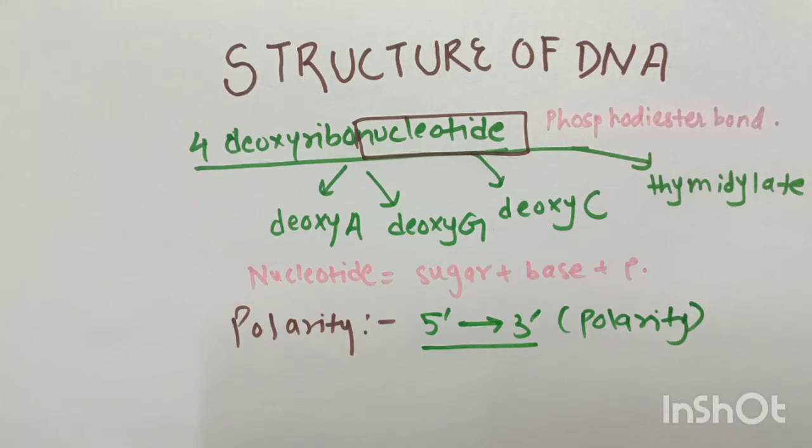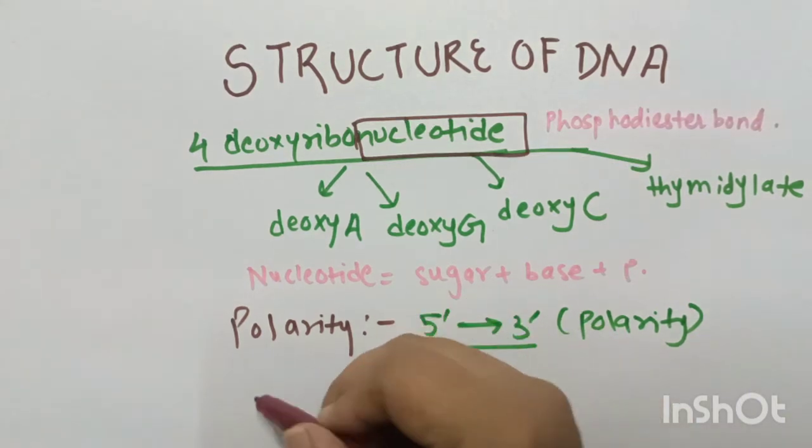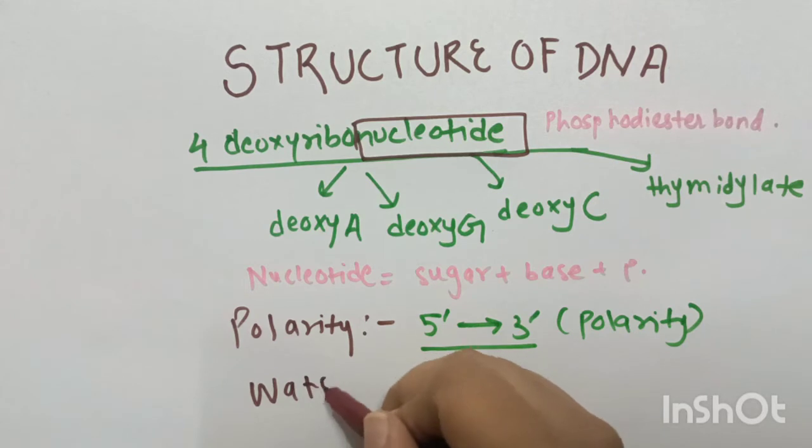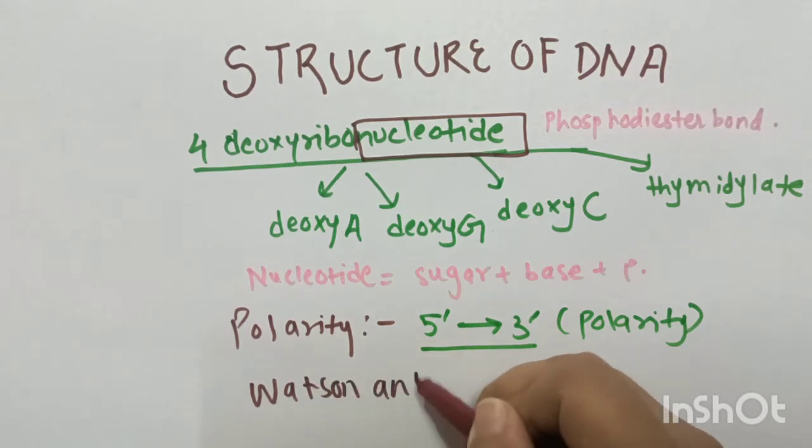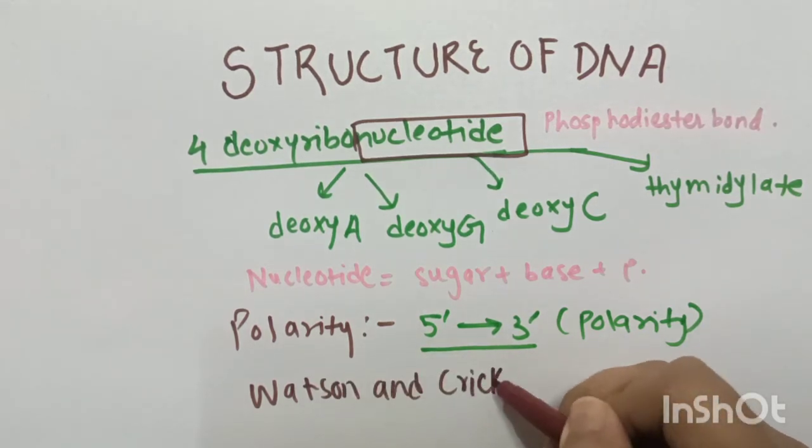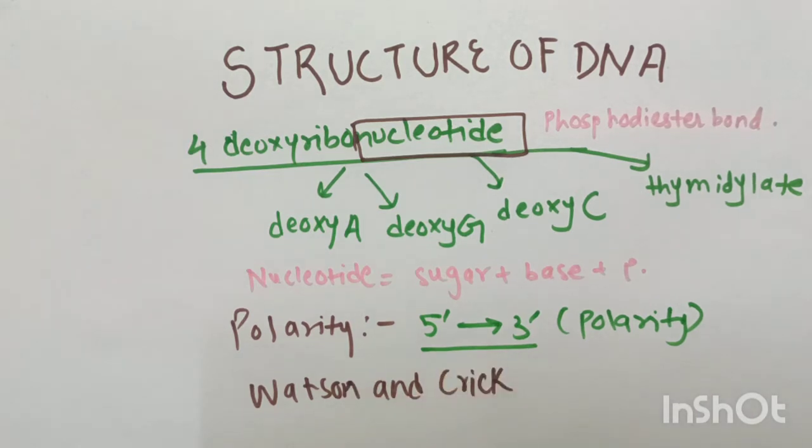As we are discussing the structure of DNA, we will be discussing the most important structure that is Watson and Crick model. What does this Watson and Crick model say? We will be discussing about 4-5 features.